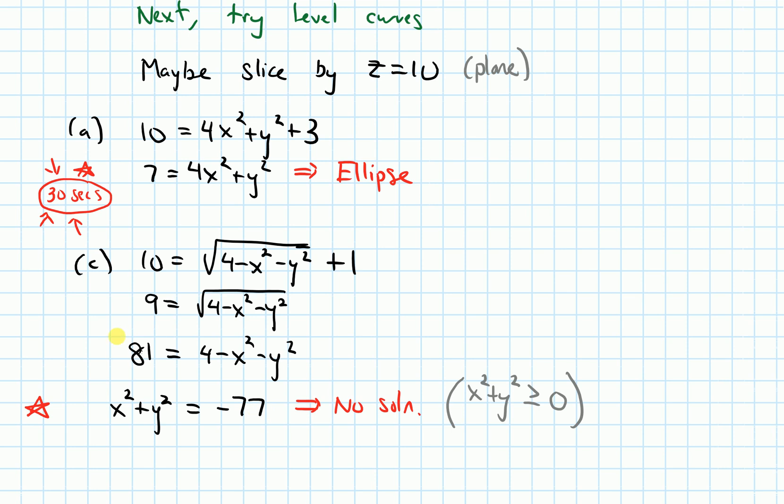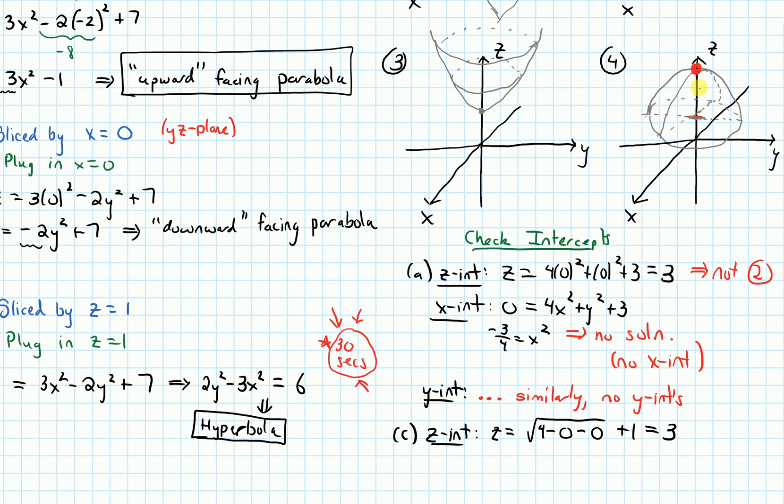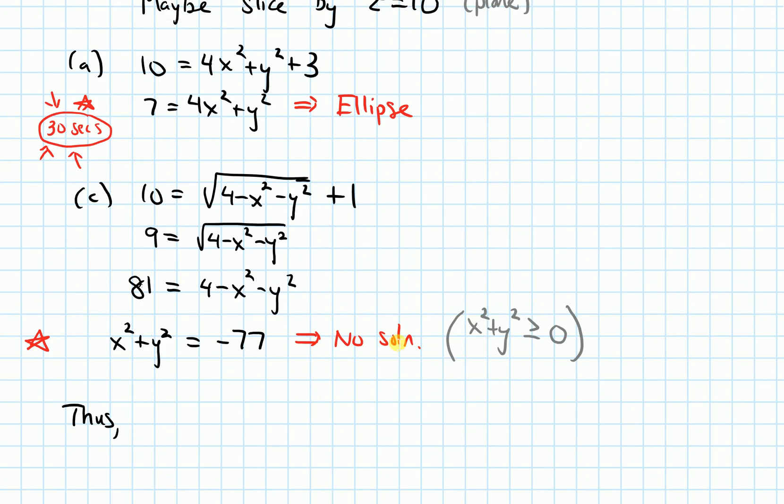In terms of our graphs, we now can identify which one goes with which one. Because we said by looking at the graphs, that if I picked a high enough value for z, it shouldn't intersect graph four. But it should intersect graph three. And if I look at what happened here, it did intersect graph a in an ellipse. But the plane z equals 10 did not intersect function c. So thus, function a matches with the parabolic bowl shape. So that was with graph three.